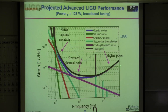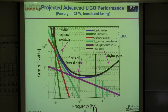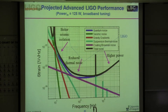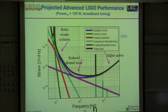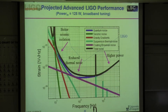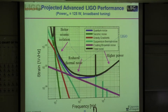The projected Advanced LIGO sensitivity curve pushes the lower frequency limit down to 10 Hz. Quantum noise governs both ends: at high frequency it's shot noise — more photons help; but increasing power also raises radiation pressure noise at low frequencies, where photon momentum fluctuations kick the mirror. The total noise curve is the sum of all contributions. Coating Brownian noise — thermal motion of molecules in the mirror coatings — is another important noise source in the mid-frequency band that we are working to reduce.